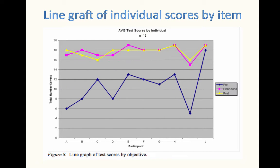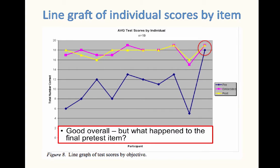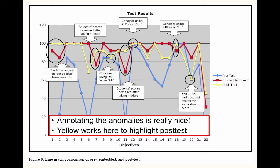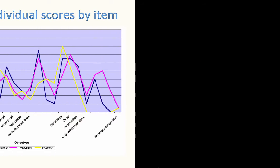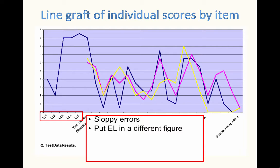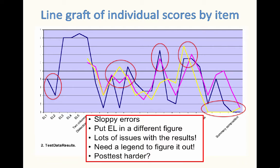This is a nice line graph of individual scores by item — it's very easy to read. But what happened to this final pre-test item? As I recall, it was too easy. We've been gifted with annotations, which is really nice, and the yellow works in this case because it's easier to see the post-test. There are some sloppy errors on one graph — it might be good to put your entry level in a different figure to spread it out a little more so that it's easier to read. There are a lot of issues with these results, but you need a legend to be able to figure it out. The post-test was harder, and you have to be careful — always make sure your items are parallel.